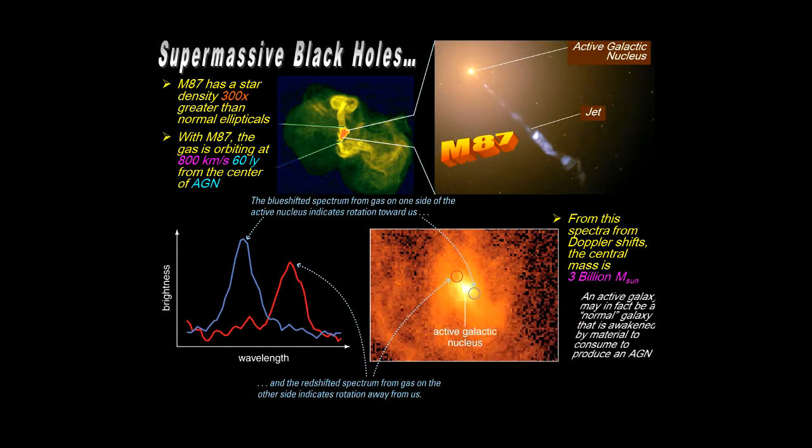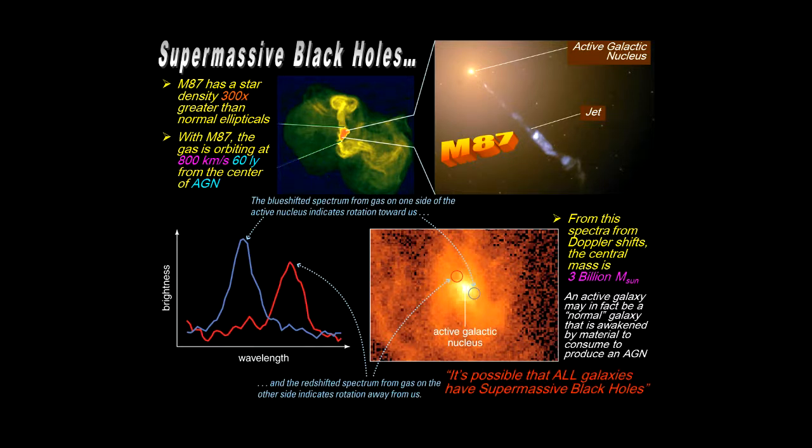That's huge, of course. So an active galaxy may actually be a normal galaxy that's just awakened by material to consume and feed this supermassive black hole. That's an ever-increasing assumption by astronomers studying these things. And so it could be stated that it's possible that all galaxies have supermassive black holes, some of which are manifesting themselves as active because of the material to feed the supermassive black hole in the center.